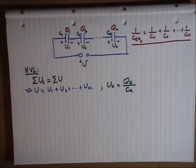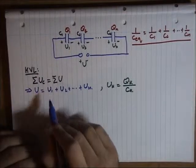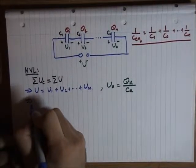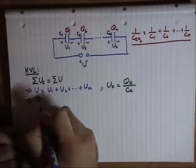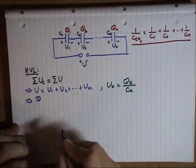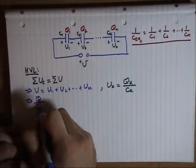And so, if we substitute into this one, we are left that the Q of all the circuits is going to be over the equivalent capacitance.